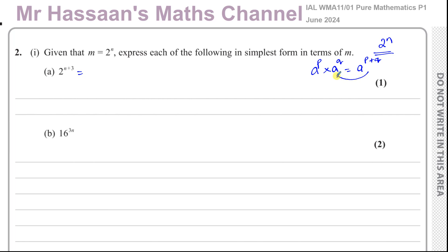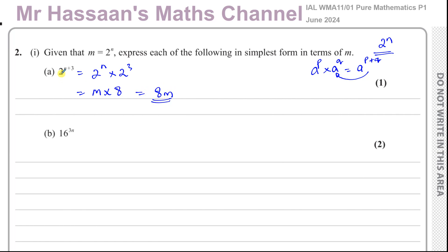So if we think about this in reverse, I can rewrite 2 to the power of n plus 3 as 2 to the power of n times 2 to the power of 3. We know that 2 to the power of n is equal to m, and 2 to the power of 3 is 8, so in its simplest form this would be 8m.